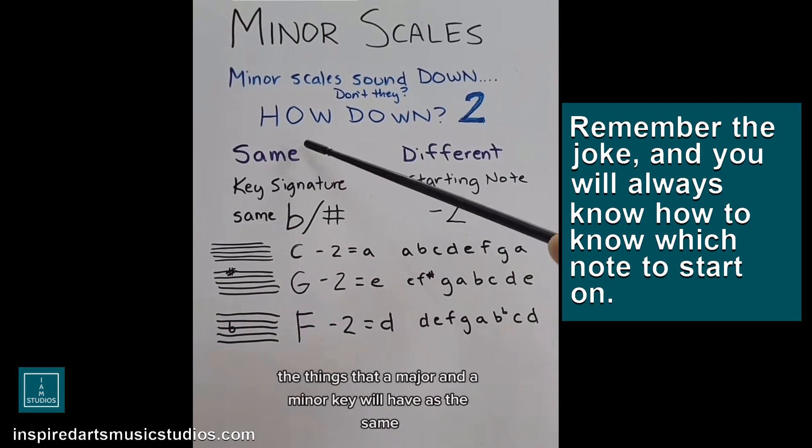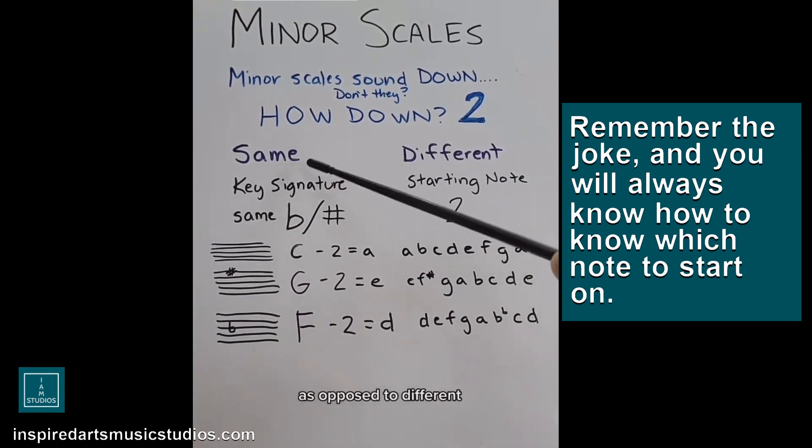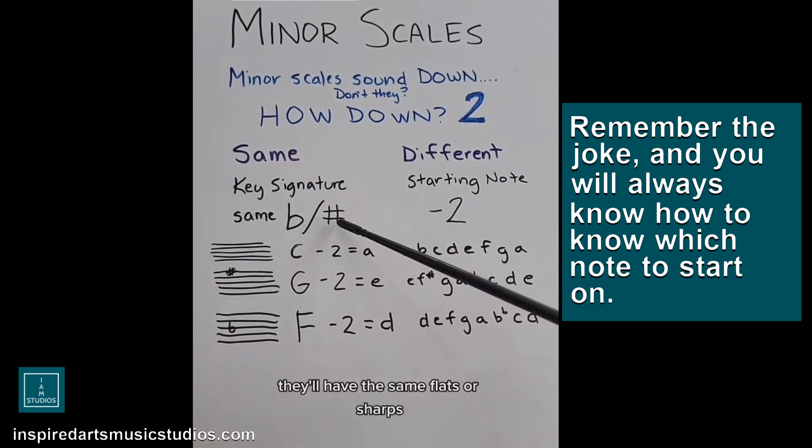So the things that they have in common, the things that a major and a minor key will have as the same, as opposed to different, is the key signature. They'll have the same flats or sharps, but they will start on a different note, which will be two down.